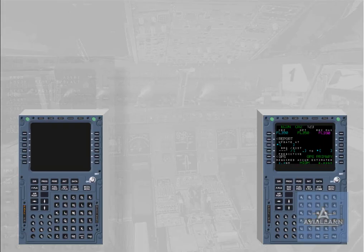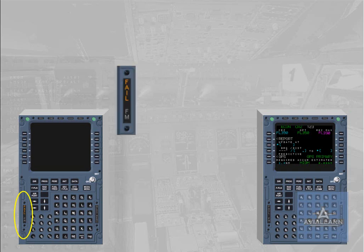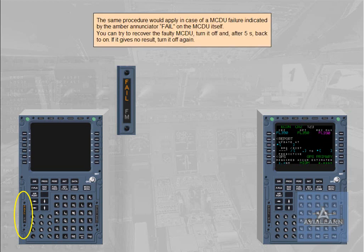The same procedure would apply in case of an MCDU failure indicated by the amber annunciator "fail" on the MCDU itself. You can try to recover the faulty MCDU: turn it off, and after five seconds, back to on. If it gives no result, turn it off again.